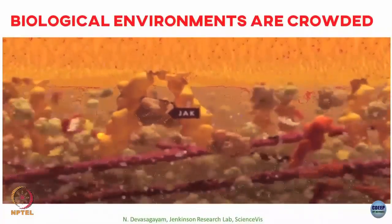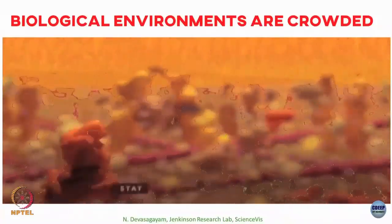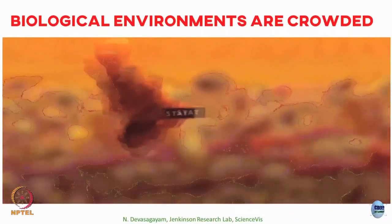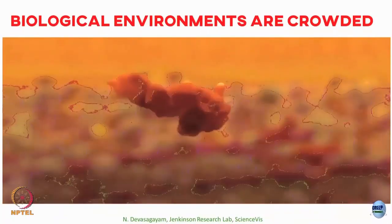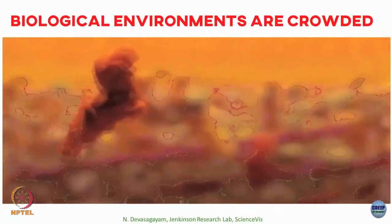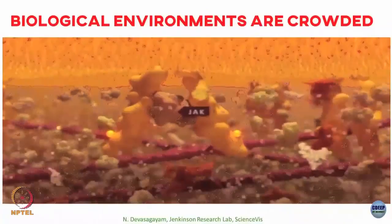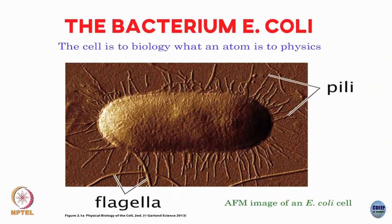If you were to transport a protein from one place to another, you would have to do it through this extremely crowded environment. What we will try to do first is estimate the numbers — get a handle on what I mean when I say the cell is extremely crowded. To do that, the system we will choose is one of the canonical biological model organisms: the E. coli bacterium.